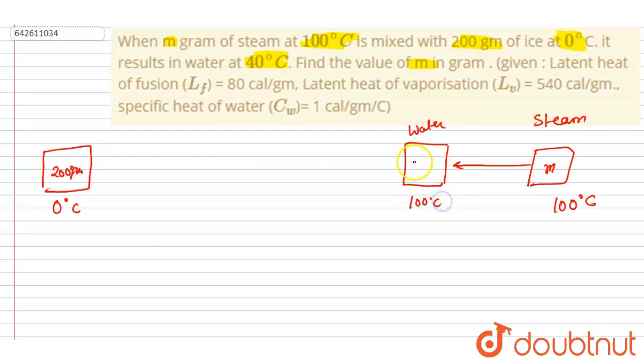So the heat released by this steam in this process, let's suppose I say Q₁. Q₁ will be equal to m into latent heat of vaporization, which is already given here, so Lᵥ.